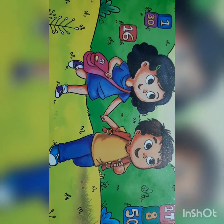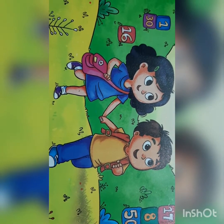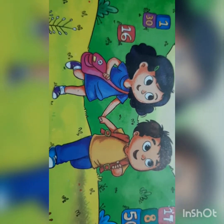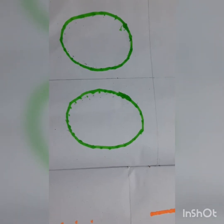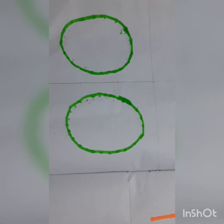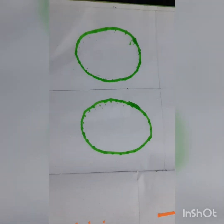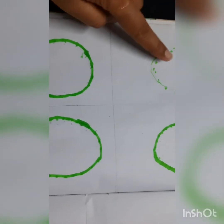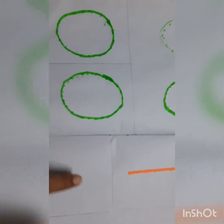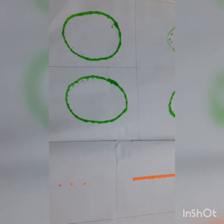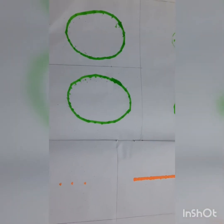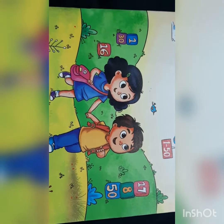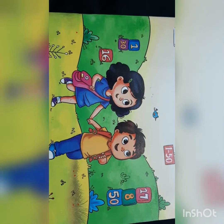Hello children of playgroup, hope you all are keeping well. In the previous class we revised tracing the numbers zero and one in the rough copy. Today we will do it in the book.